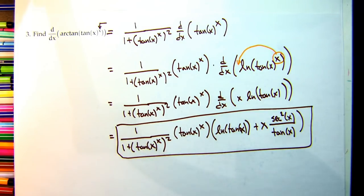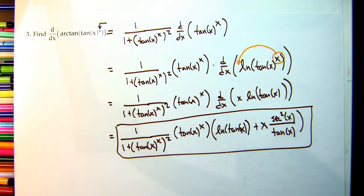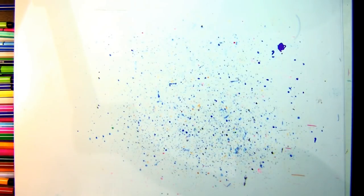Don't over-simplify. Two reasons: first, any simplification risks introducing copying or algebra mistakes — check your first exam if you doubt that happens. Second, in this form, the grader can clearly see each step you took and award partial credit accordingly. This is a good place to stop and box the answer. Three problems down, three to go.